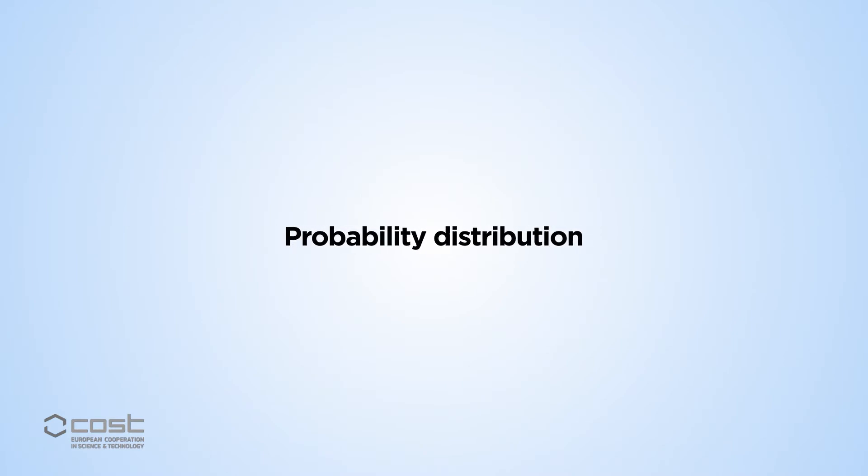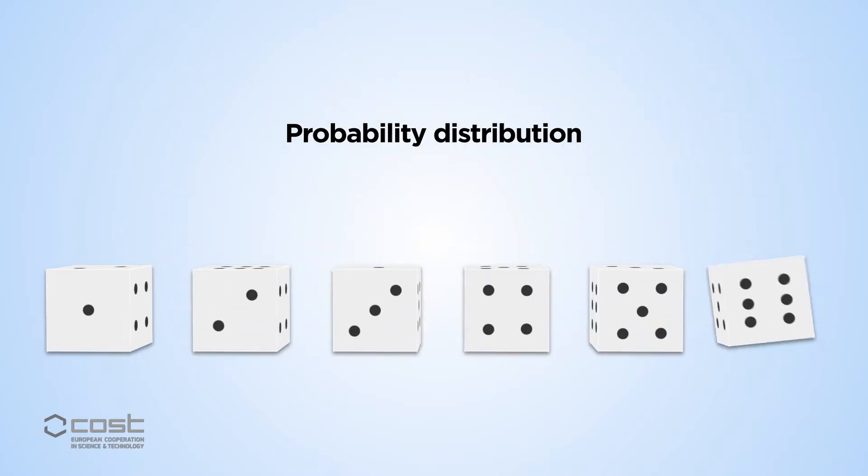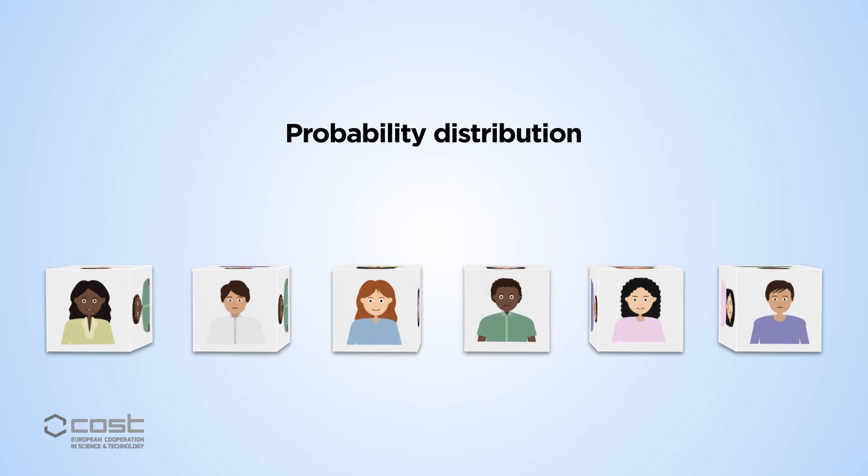A probability distribution assigns a probability to a particular outcome. For example, when rolling a die, each outcome has a probability of 1 out of 6. These probability distributions also describe networks.